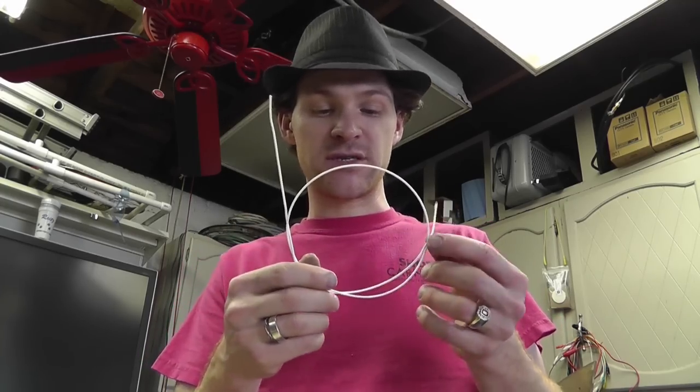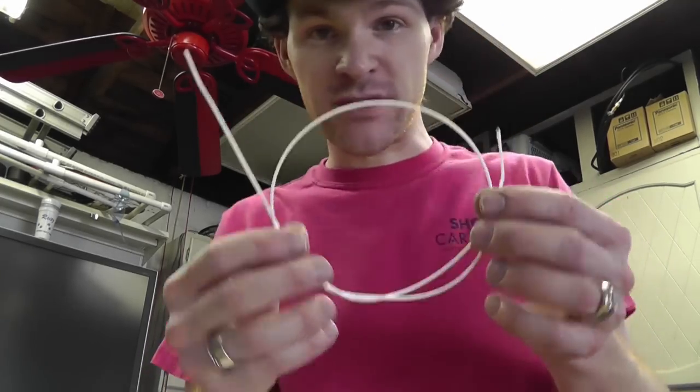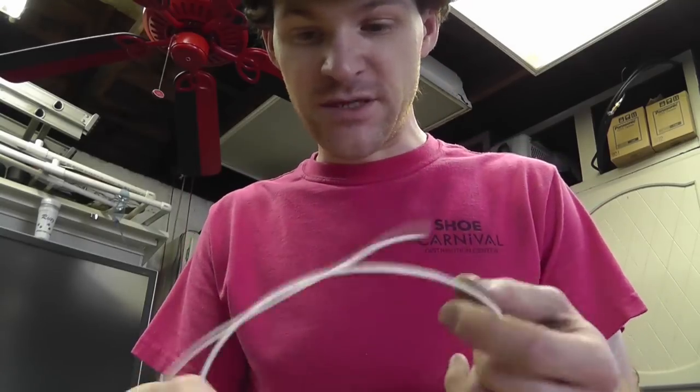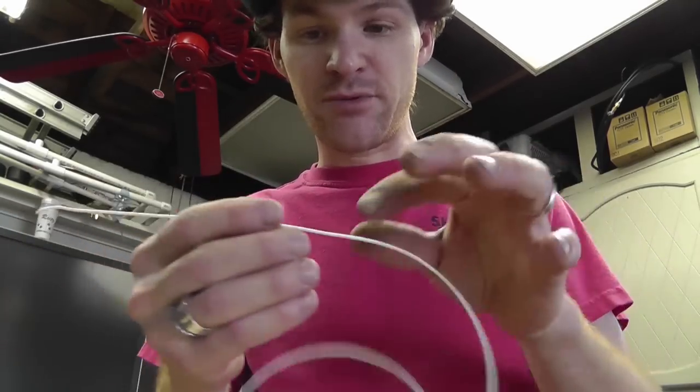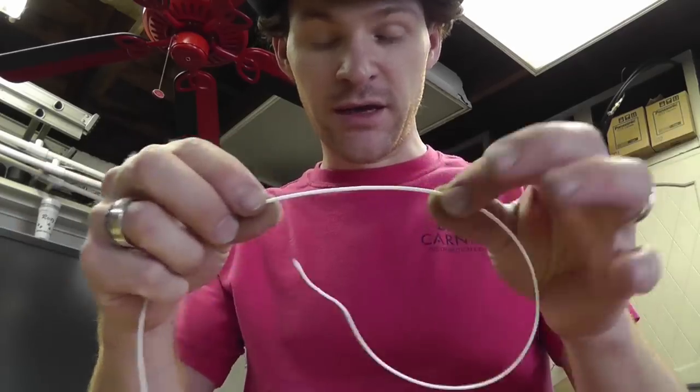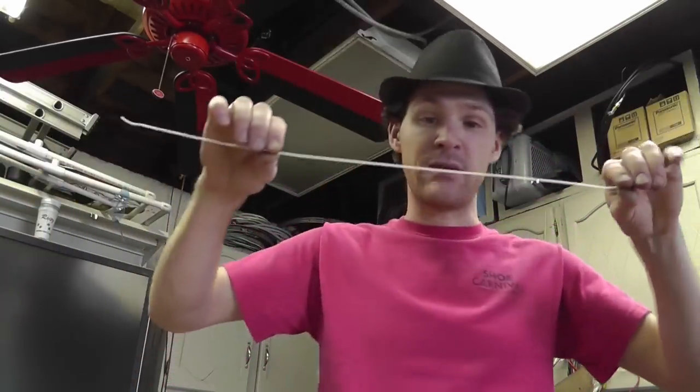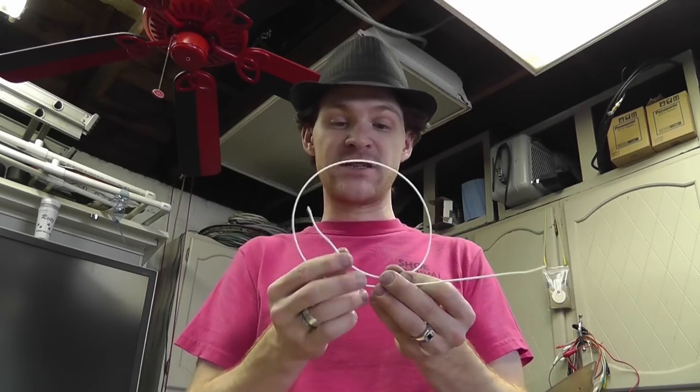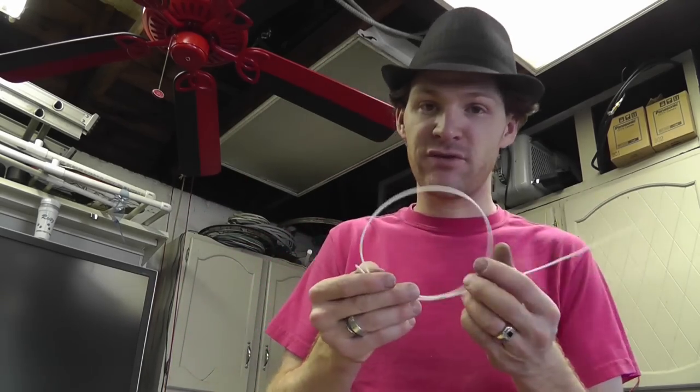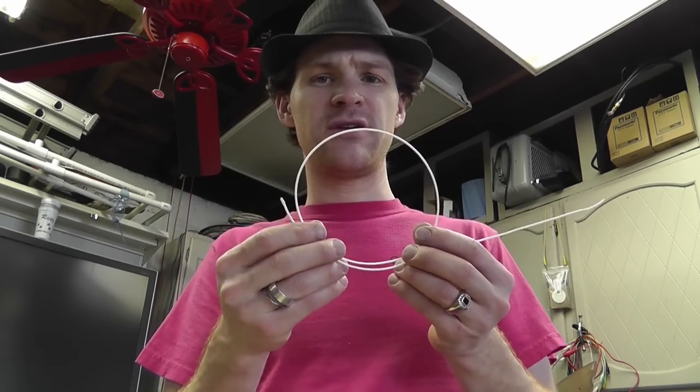This is what my 3D printer uses and most everyone else's 3D printer uses. This is called filament. It's nothing more than plastic in a particular shape, size, diameter. This particular stuff is 1.75 millimeters in diameter. Now this stuff is fairly expensive. It's not ridiculous, you can find it for decent prices, but it would be a lot easier if you could just make this stuff.